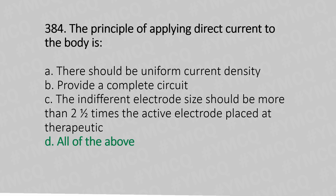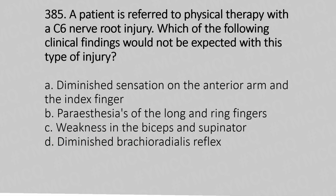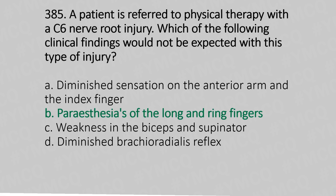Question 385: A patient is referred to physical therapy with a C6 nerve root injury. Which of the following clinical findings would NOT be expected? Option A: diminished sensation on the anterior arm and index finger. Option B: paresthesia of the long and ring fingers. Option C: weakness in biceps and supinator. Option D: diminished brachioradialis reflex. The answer is Option B: paresthesia of the long and ring fingers.